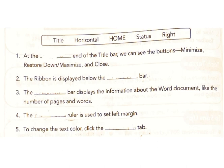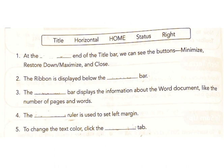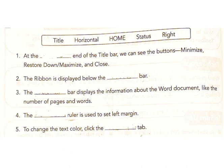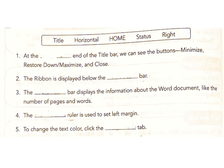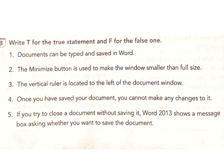Down, maximize and close. Answer: right. Two: the ribbon is displayed below the bar. Answer: title. Three: the bar displays the information about the word document like the number of pages and words. Answer: status. Four: the ruler is used to set left margin. Answer: horizontal. Five: to change the text color, click the tab. Answer: home.